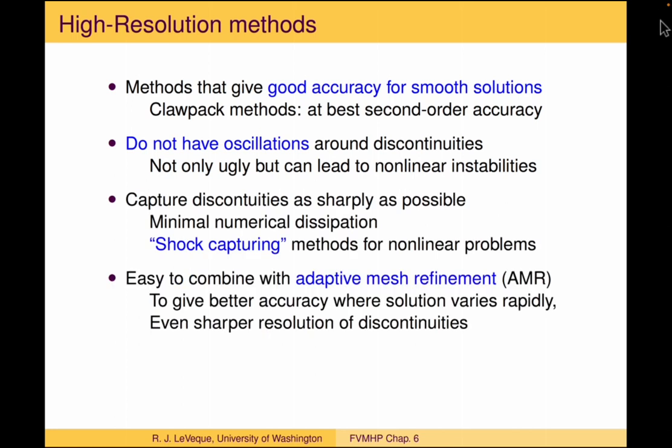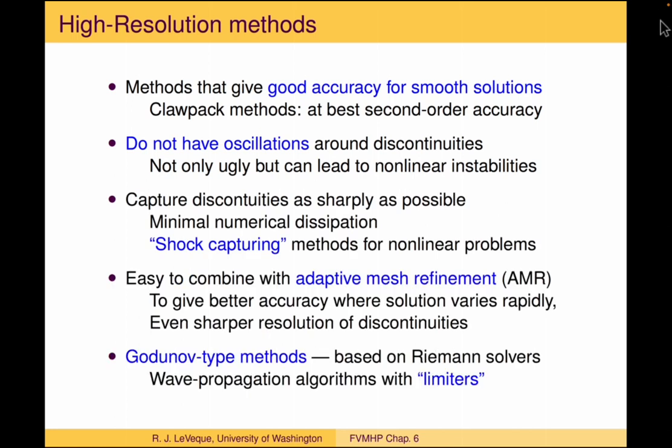Recalling from the last lecture, the main goal here is to get methods that have good accuracy on smooth solutions — close to second-order accuracy — but that don't have any oscillations around discontinuities and that also capture the discontinuities as sharply as possible. And then to extend them to systems of equations we'd like to look at it in the form of an extension of Godunov's method based on solving Riemann problems.